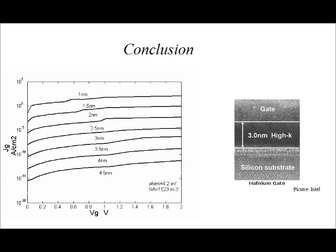As we saw in the simulations, quantum tunneling enables electrons to pass through a barrier of higher energy when intuition would tell us it couldn't. We also confirmed from the simulations that the probability of tunneling decreases exponentially with increasing gate oxide thickness. Thanks to high-k dielectrics, MOSFET manufacturers are able to increase the thickness of gate dielectrics without sacrificing capacitance performance.